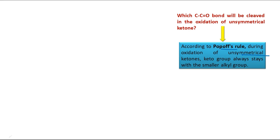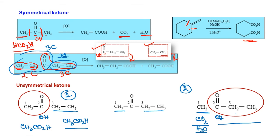According to Popoff's rule, during the oxidation of unsymmetrical ketones, the keto group always stays with the smaller alkyl group. If that is true, then looking at our unsymmetrical ketone — the methyl group is the smaller alkyl group — the CO should remain with the methyl group. So the 2-3 bond cleavage is the correct one to consider, not the 1-2 bond cleavage, according to this rule.